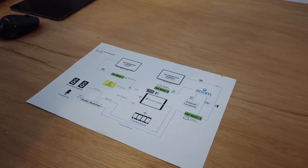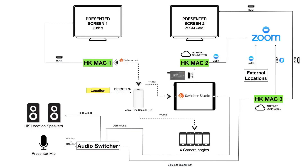One critical thing we realized was that you can only use the new iPad Pro with Switcher Studio to do this, because it has a USB-C port, which allows us to use a dongle to output HDMI — which you can't do with earlier iPads.